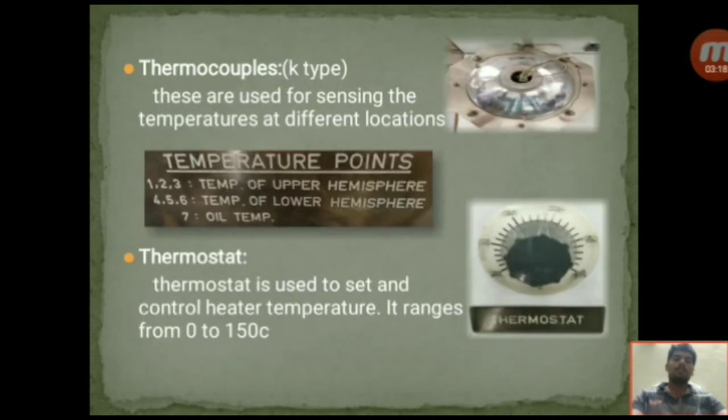Thermocouples. These are used for sensing the temperatures at different locations. In this setup, we are going to use K-type thermocouples. The thermocouples are located at different locations of the sphere. One, two, three thermocouples are located at the upper hemisphere. Four, five, six thermocouples are located at the lower hemisphere. And the seventh thermocouple is located at the oil temperature.